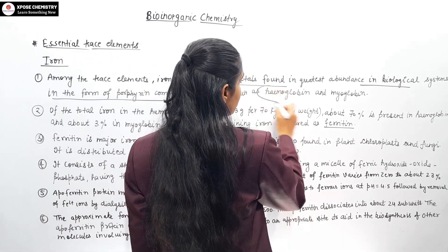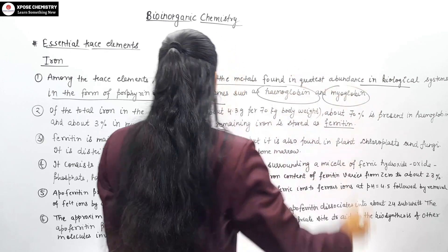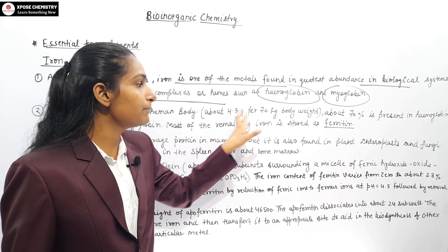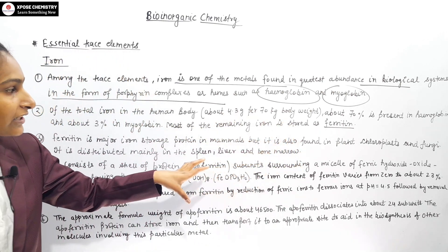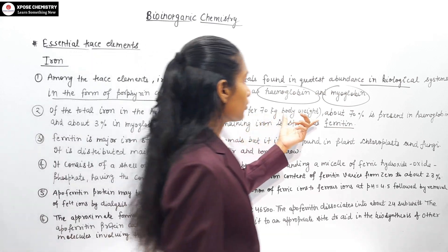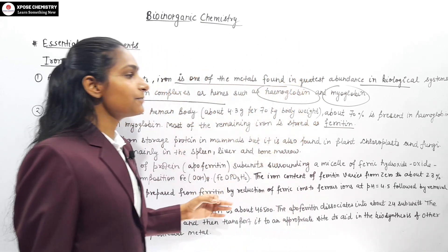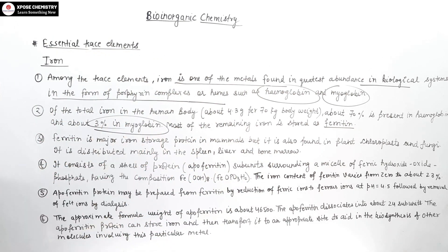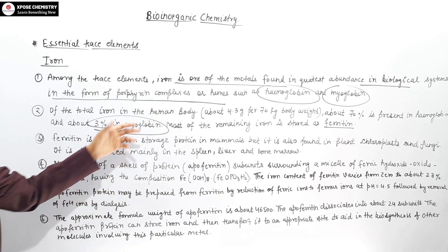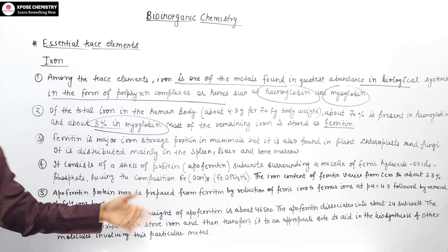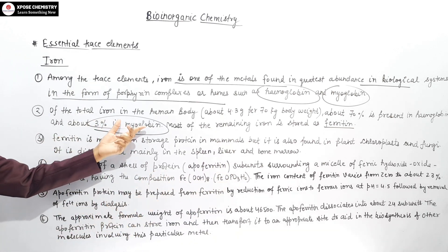Iron is present in the form of hemoglobin and myoglobin. Total iron in the human body is about 4.3 grams per 70 kg body weight. About 70% is present in hemoglobin and about 3% in myoglobin.